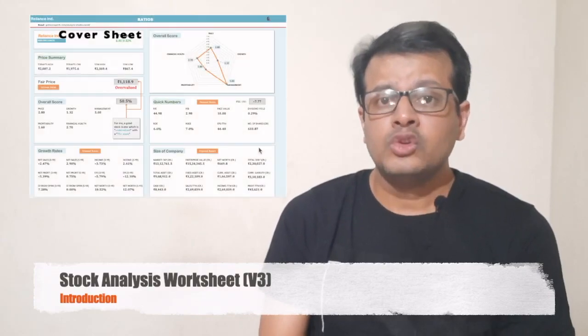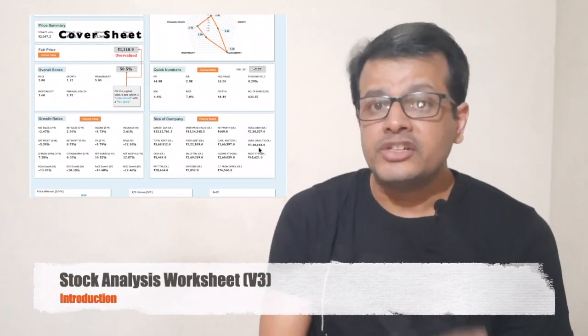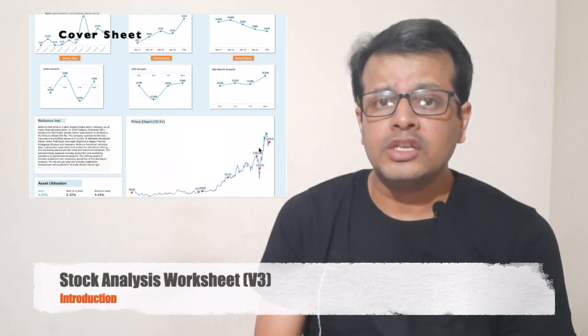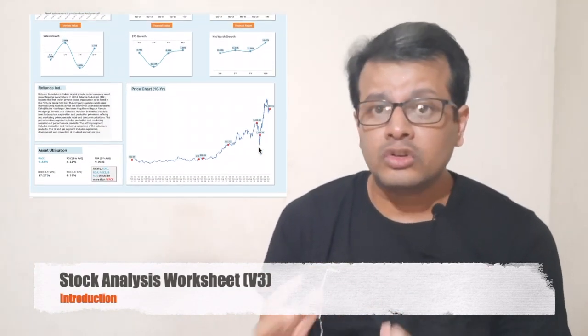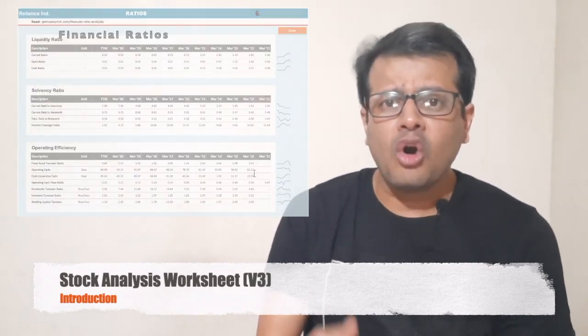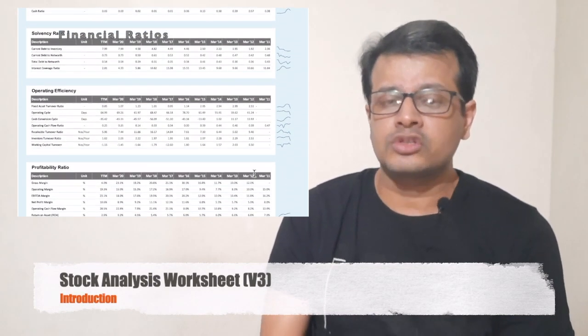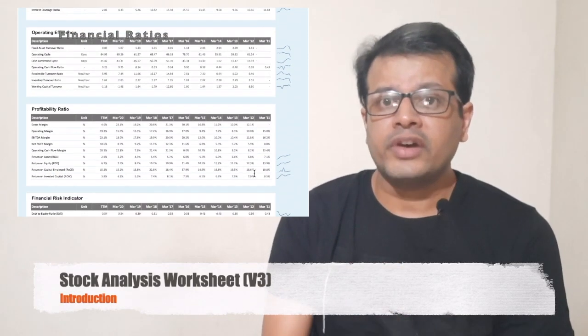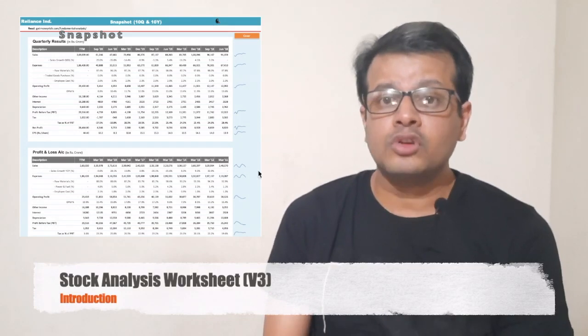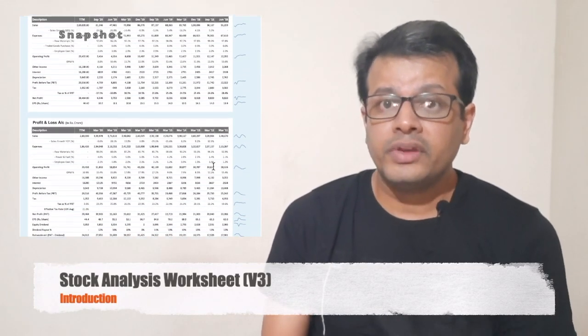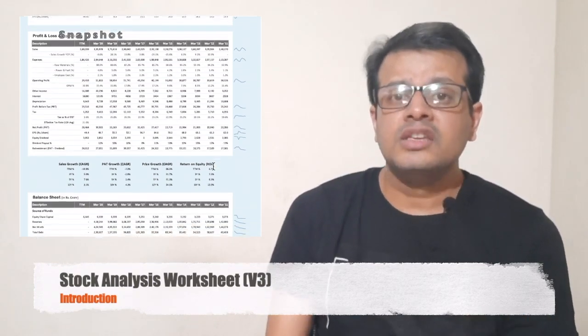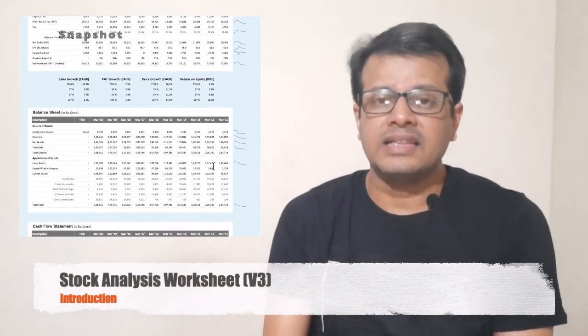And in the report, you can see the intrinsic value of the stock. You can see how the overall company is positioned because it gives the overall score to the company. You can also see all the major financial reports for this company in the financial ratio sheet. There is also a snapshot sheet. This is one of my favorite sheets because it gives the last 10 years performance of the company at a glance.